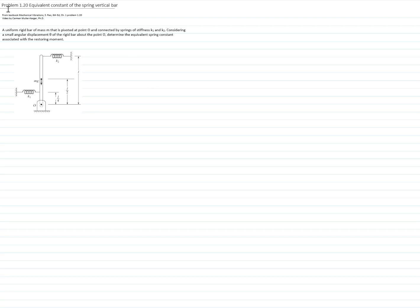In this video, we'll solve problem 1.20 of the textbook Mechanical Vibrations from Rao, 6th edition. This is part of chapter 1. My name is Carmen Mueller-Karriot. Here we have a uniform bar of mass M that is pivoted at point O and is connected to two springs, spring of constant K1 and spring of constant K2. We consider a small angular displacement of the rigid bar, and we will determine the equivalent constant of the spring with a restoring moment.